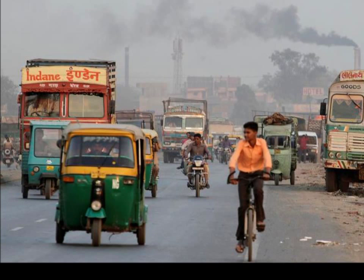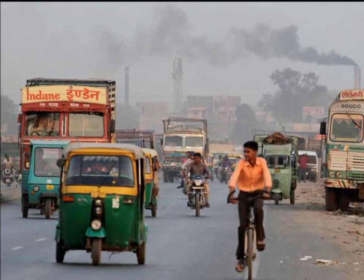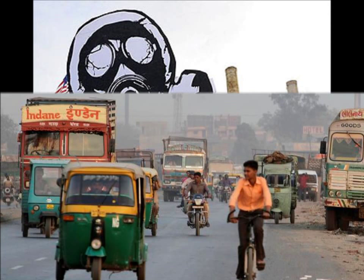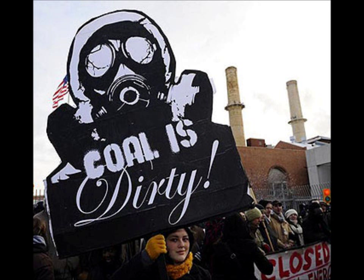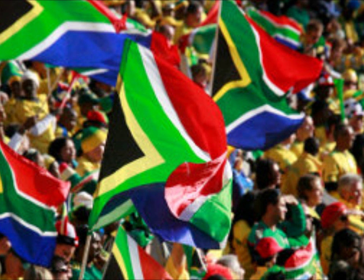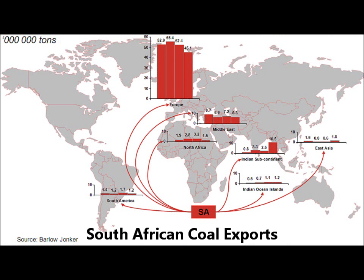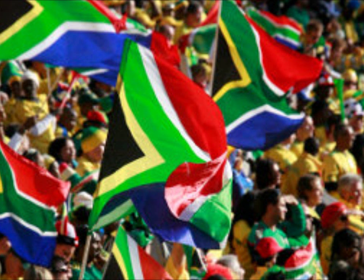There are a variety of domestic pressures from within BASIC countries that help to explain their negotiating positions and principles. Firstly, China and South Africa are incredibly dependent on coal as a cheap but dirty source of energy. South Africa derives about 70% of total primary energy supply from coal, and coal-fired power stations provide 93% of the country's electricity production.